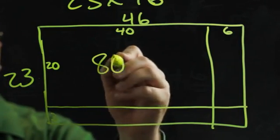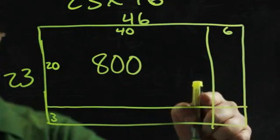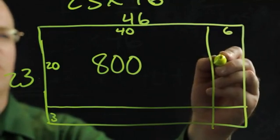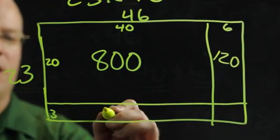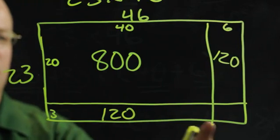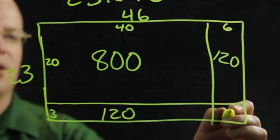20 times 40 is 800. Now this section is 20 by 6, which is 120. This section is 3 by 40, which is 120. And this section is 3 by 6, which is 18.